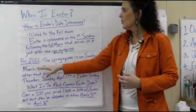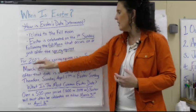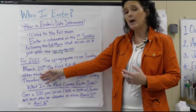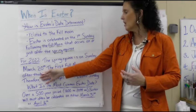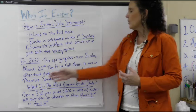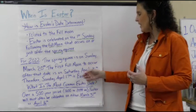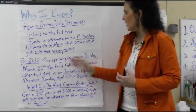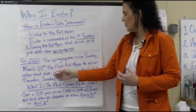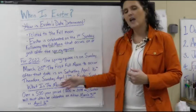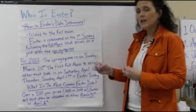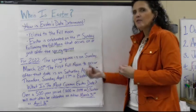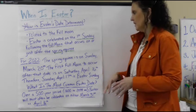For 2022, the spring equinox is on Sunday, March the 20th, which has already passed. The first full moon to occur after that is going to be on Saturday, April 16th. Therefore, we've had the vernal equinox and the full moon, so that next Sunday, April 17th, is Easter Sunday. So every year, it's the first Sunday after the vernal equinox and after the full moon — every year, that's when Easter is.